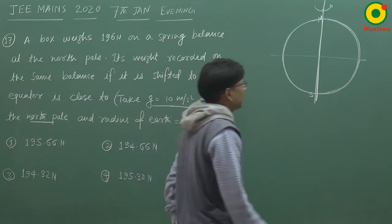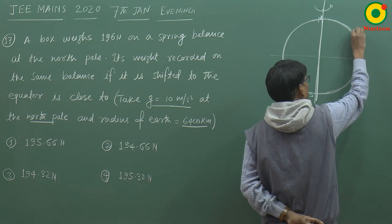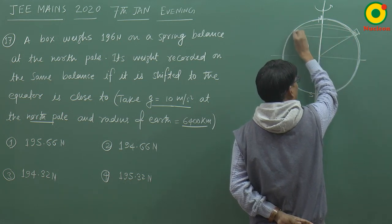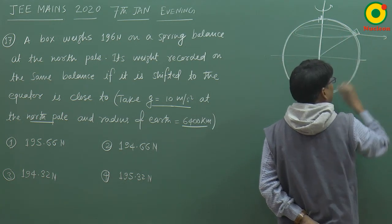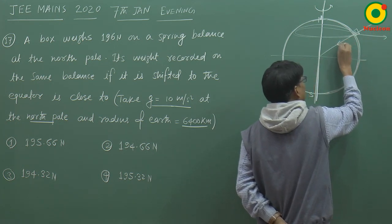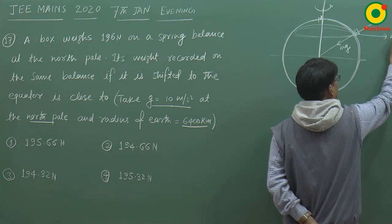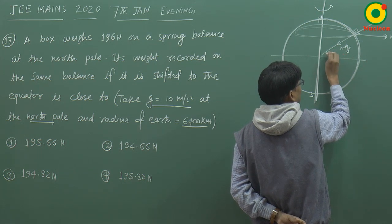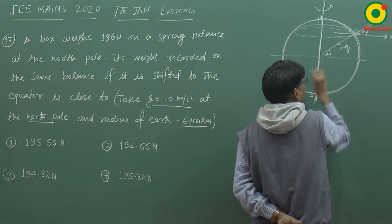कितना different आता है, हम लोग जानते हैं। अगर Earth rotate करता है, कोई object circular motion कर रहा होता है, तो उस पर centrifugal force लगता है — normal इधर लगता है, mg नीचे लगता है, और centrifugal force mω²r बाहर की तरफ लगता है।